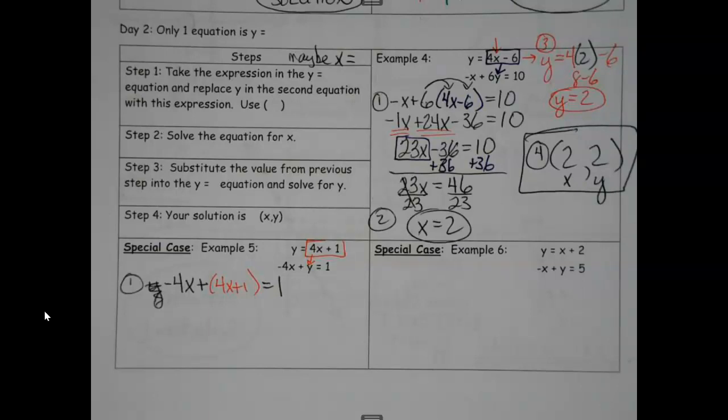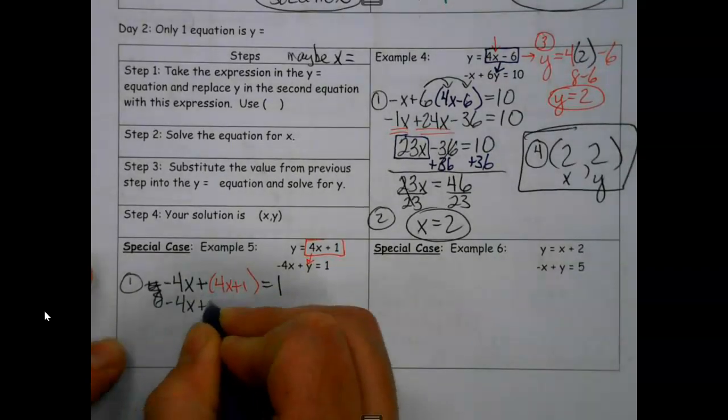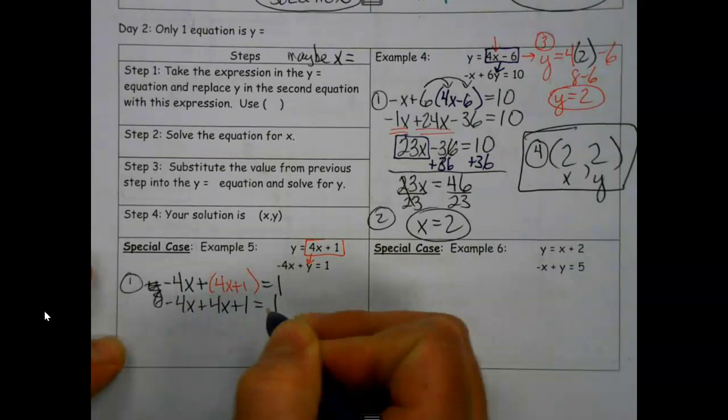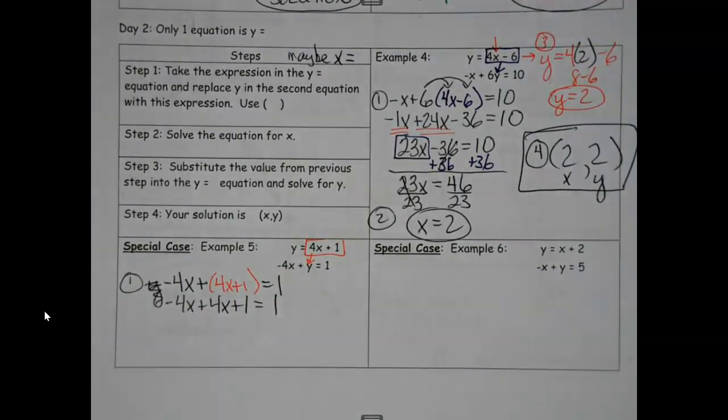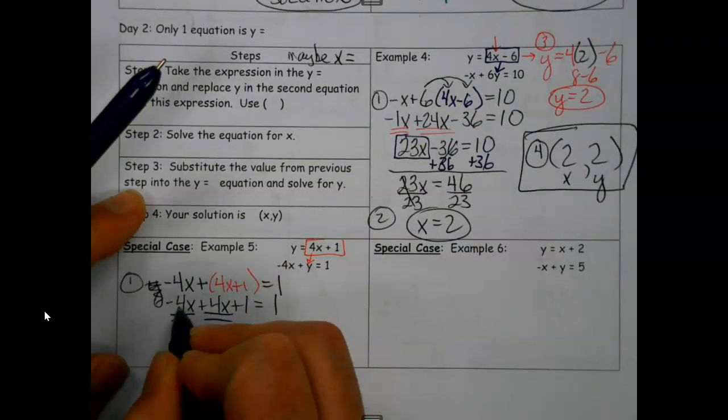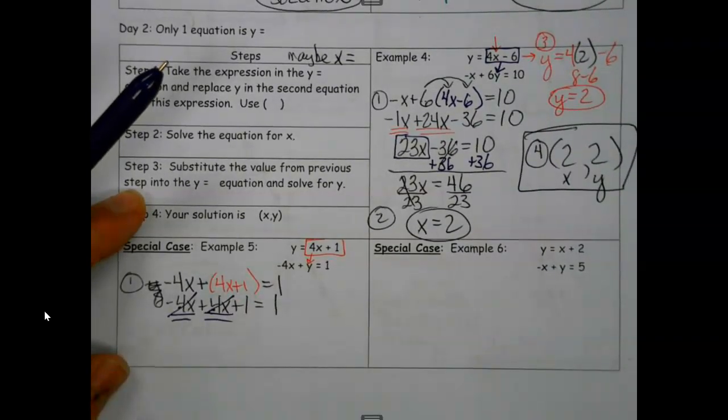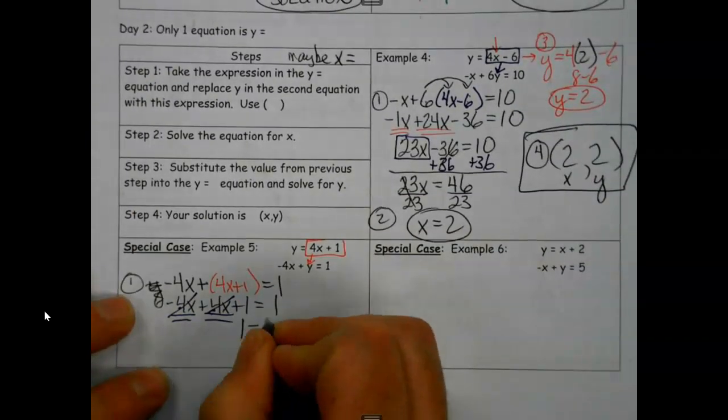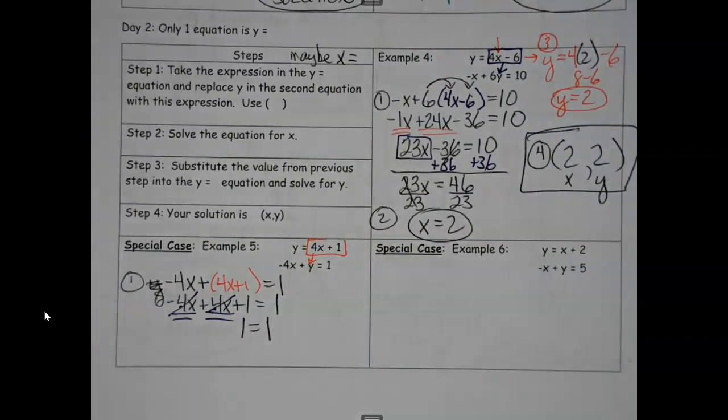And so you're like, well, there's nothing for me to distribute to the 4x and the 1. Like up here, we had to distribute that 6 through. What if there's nothing to distribute? I can just start combining things at this point. So I'm actually going to rewrite it just so I don't confuse myself here. But here's where the special case comes into play. I go to put my like terms together.